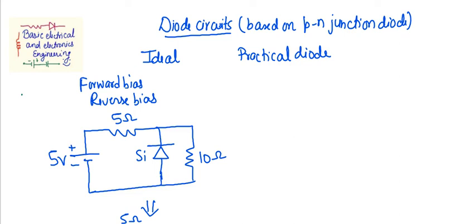The next topic is diode circuits, which are based on PN junction diodes. Before starting any diode circuit, we should know the properties of diodes when used as ideal or practical diodes. For the ideal case, when in forward bias it acts as a short circuit, and for reverse bias it acts as an open circuit.